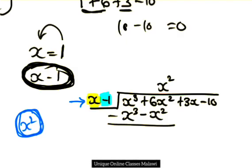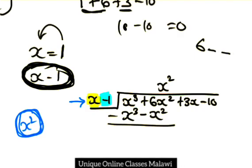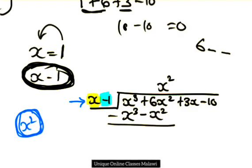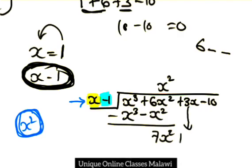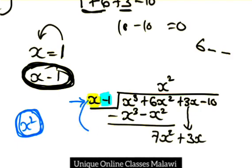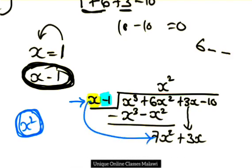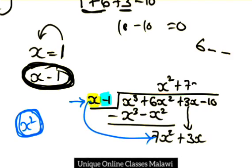X cubed and x cubed cancel to zero. Now 6x squared minus minus x squared, which is plus, gives us 6x squared plus x squared, which equals 7x squared. Then we drop down 3x.